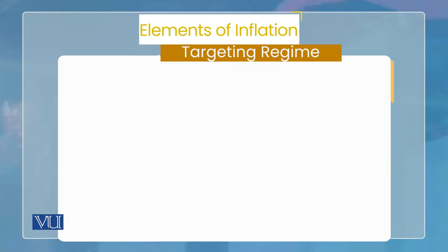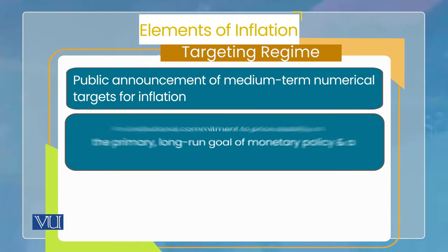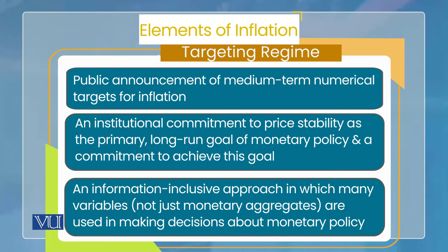Inflation targeting کو ہم اس کے elements سے define کرتے ہیں — جس strategy میں یہ elements پائے جائیں، اسے inflation targeting strategy کہیں گے۔ سب سے پہلا element یہ ہے: public announcement of a medium-term numerical target for inflation — یعنی کوئی numerical target announce کیا جائے medium term کا، جیسے on average پانچ یا تین سال کے اندر یہ inflation کا target maintain کریں گے۔